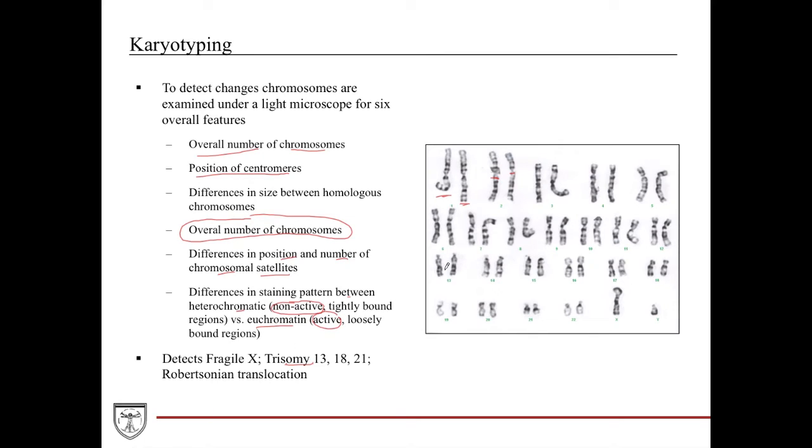Probably the biggest reason why karyotyping is used is because it can determine these really pretty much classically described diseases. You can look at fragile X, you can look at the X chromosome and see if it has say a little strand hanging off in the end of the fragile X. If you have an extra one, you can have trisomies, and you can also look at this to figure out if there's a Robertsonian translocation.